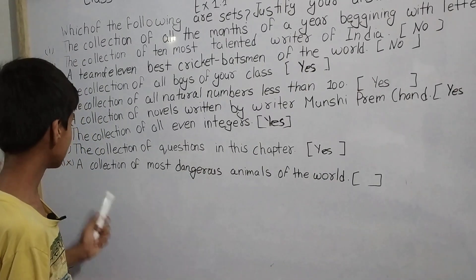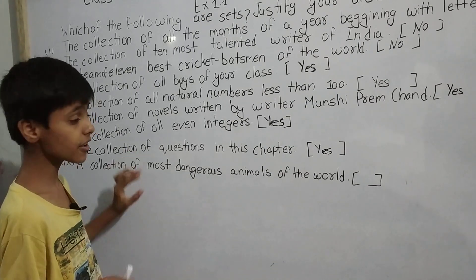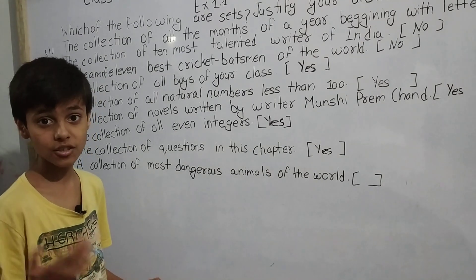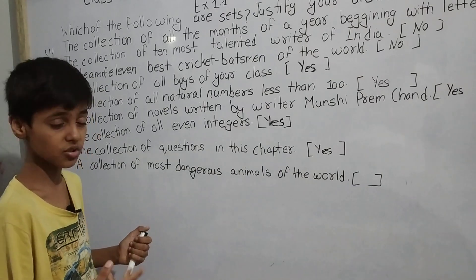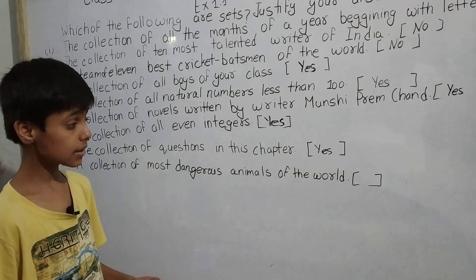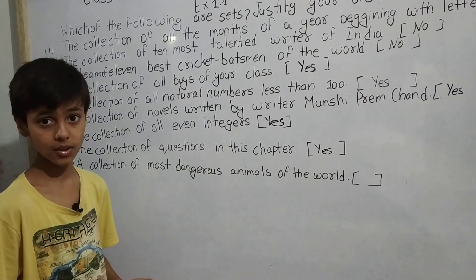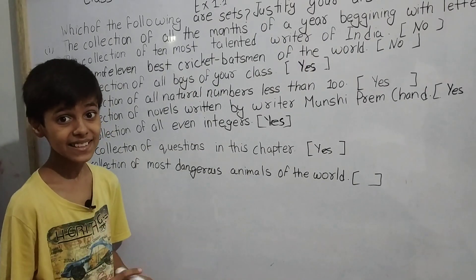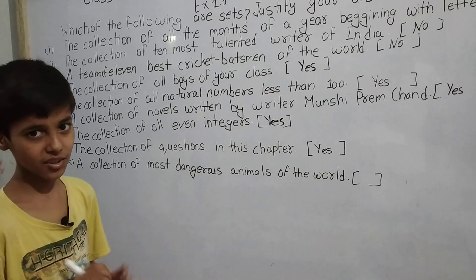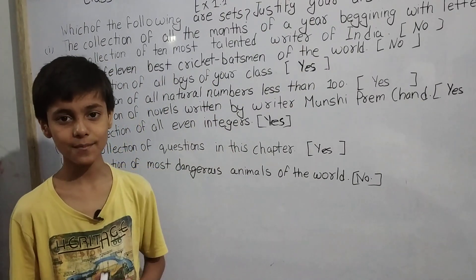Part (ix): A collection of most dangerous animals of the world. This is not a set because it may vary from person to person. I may say king cobra is the most dangerous animal; you may say the poison arrow frog is. It varies according to each person's fear. Since the elements are not well defined, this is not a set. That concludes today's topic — please like and subscribe, thank you.